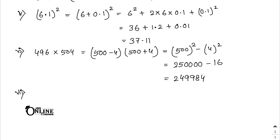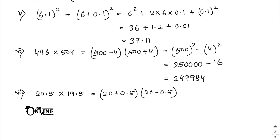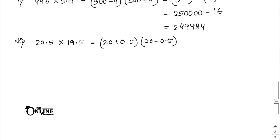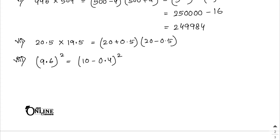20.5 × 19.5 = (20 + 0.5)(20 - 0.5) — apply a² - b² formula. 9.6² = (10 - 0.4)² — apply (a - b)² formula. I hope you can solve these.